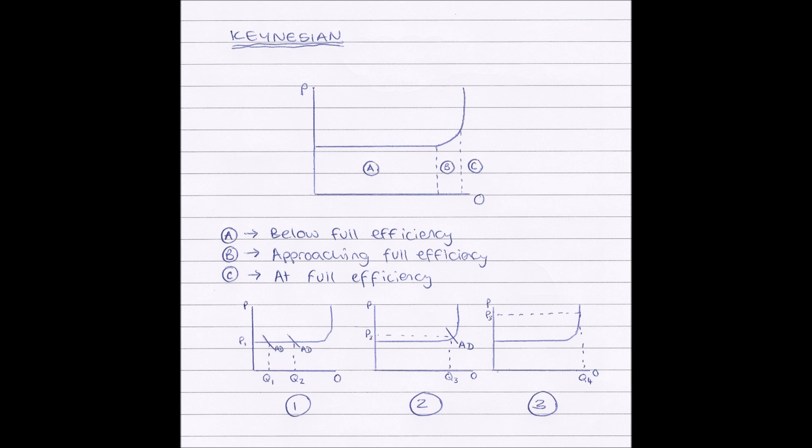So that's shown on diagram 2, where aggregate demand is, so where our equilibrium output is in section B, our price has gone up from P1 to P2.